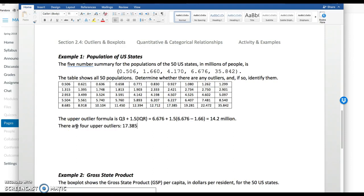17.385, 19.281, 22.472, and here California's population, 35.842 are the four upper outliers.